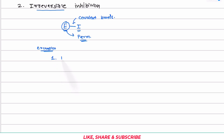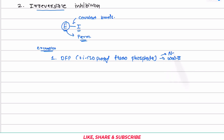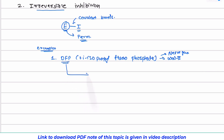The first example is DFP. The full name of DFP is diisopropyl fluorophosphate. This compound was developed by the Germans during World War II and is also called a nerve gas. This compound irreversibly inhibits the enzyme acetylcholinesterase.